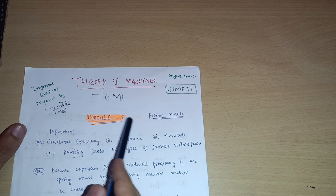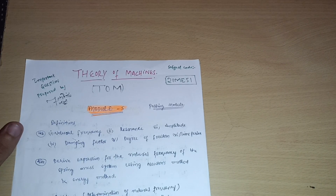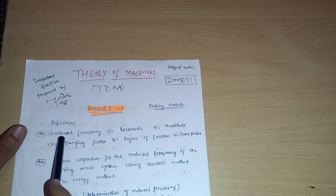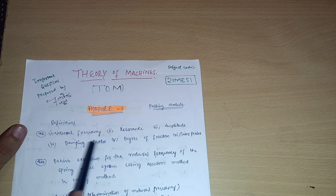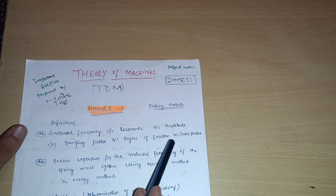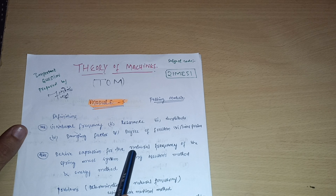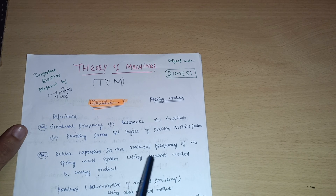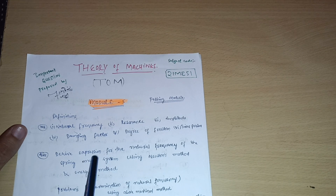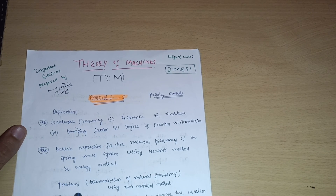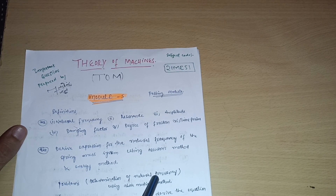Module 5 is the passing module, comparatively easier than other modules. First of all, go through the definitions like natural frequency, resonance, amplitude, damping factor, degree of freedom, and time period. There are some derivations like deriving the expression for the natural frequency of a spring-mass system using Newton's method and energy method. On that basis, there are some problems where you are supposed to calculate or determine the natural frequency.